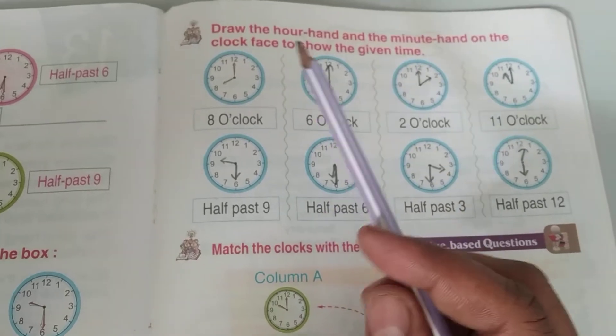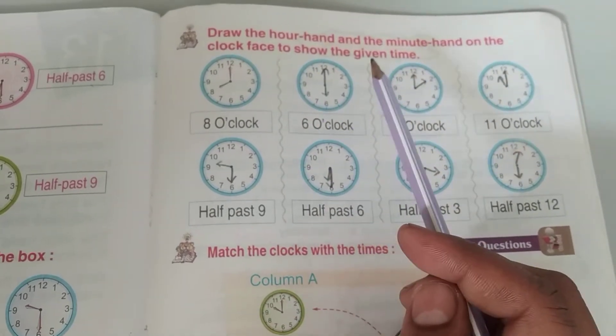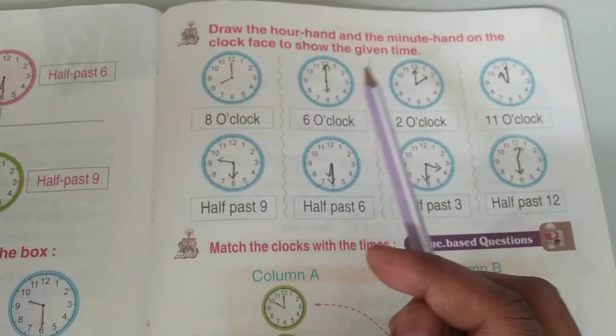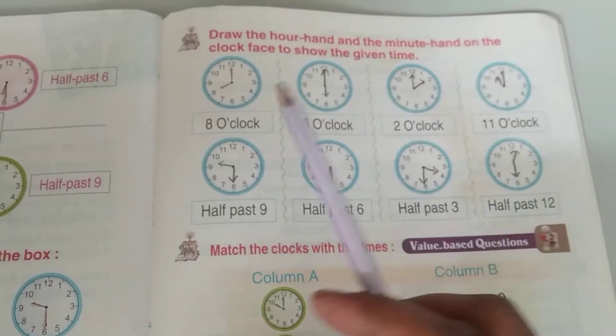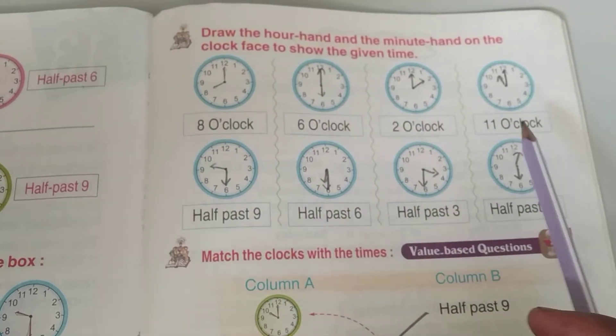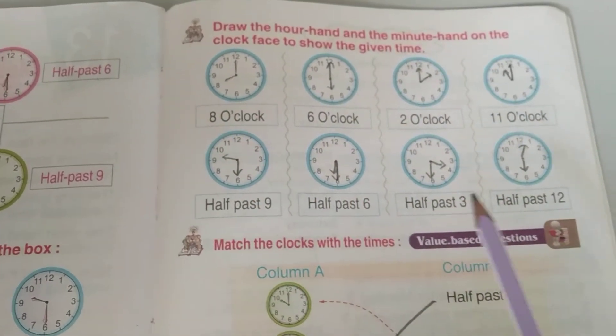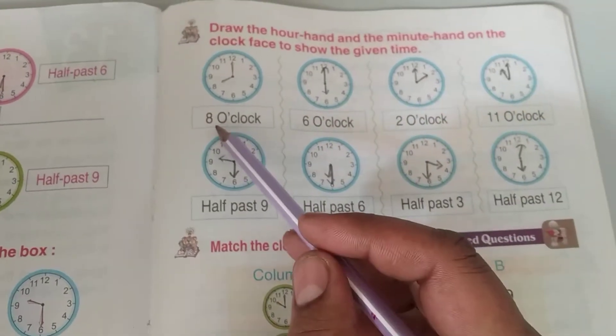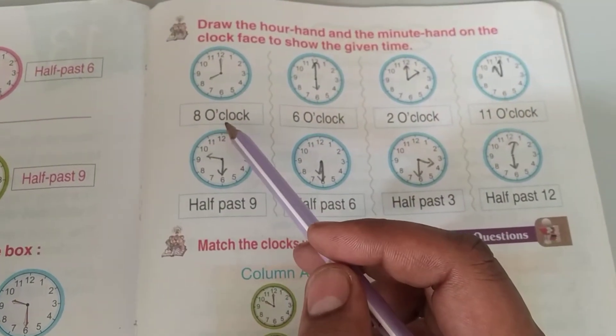Good morning students. Draw the hour hand and the minute hand on the clock face to show the given time. We have placed the hour hand and minute hand according to the given time. First one is solved for you in the book: 8 o'clock.